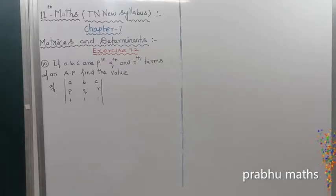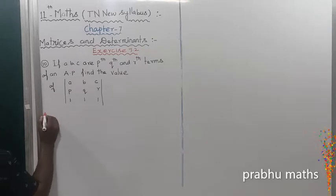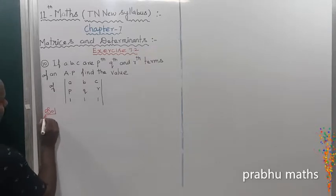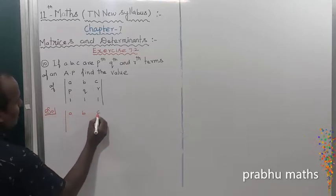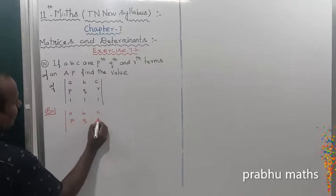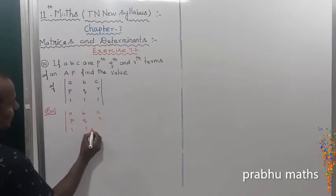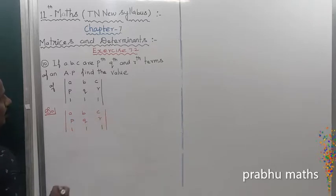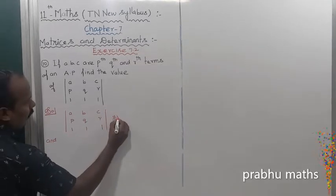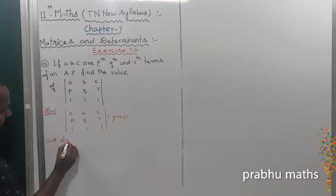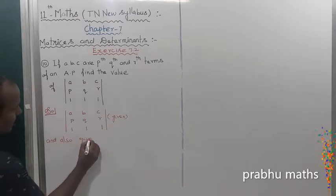1, 1, 1. Okay, so first of all, the given determinant is: determinant of a, b, c; p, q, r; 1, 1, 1. And also given that...